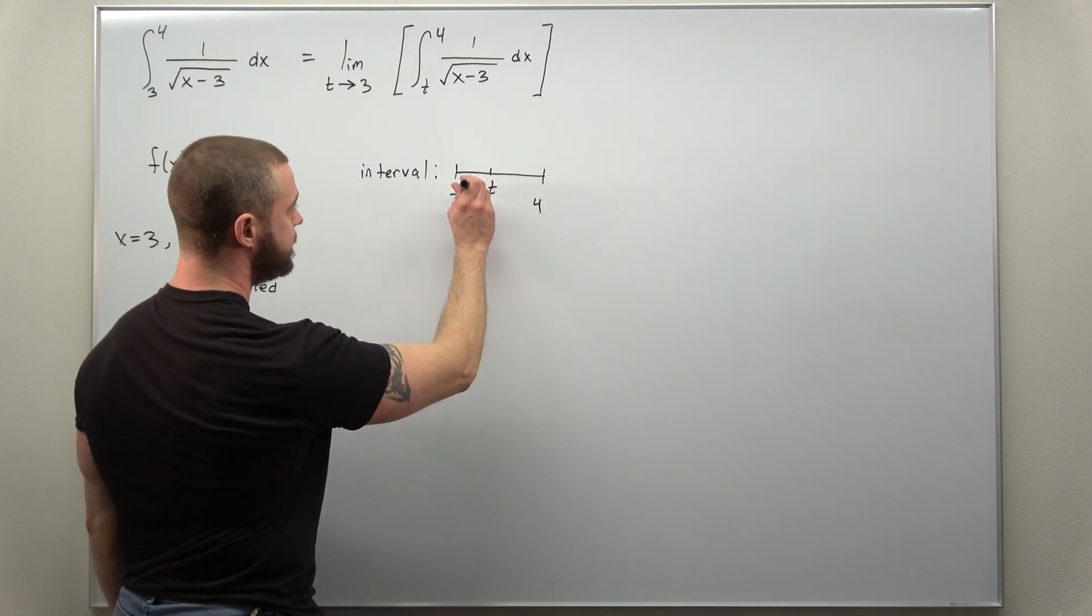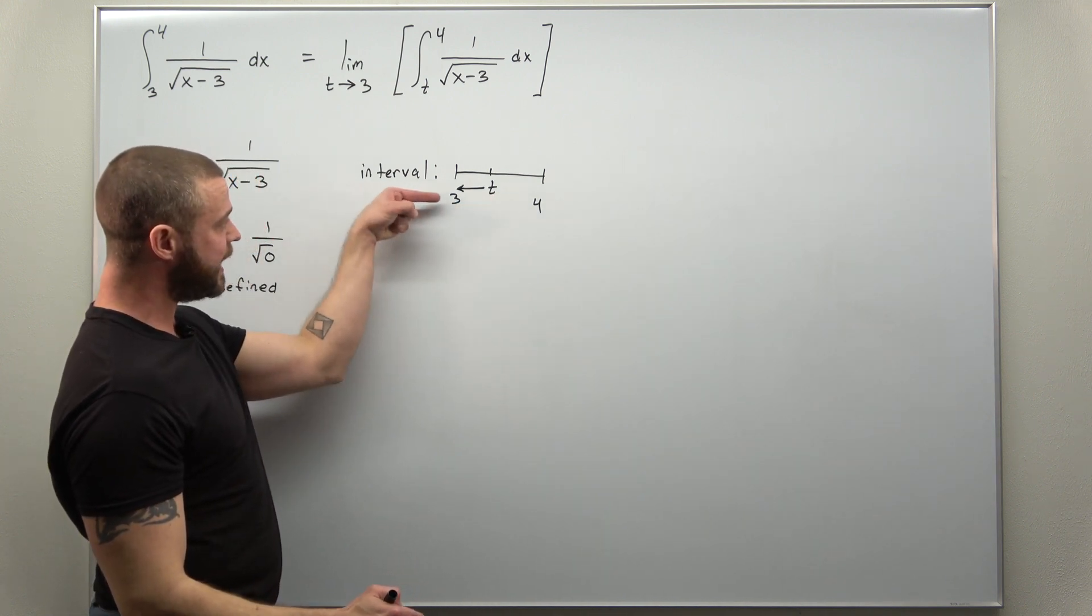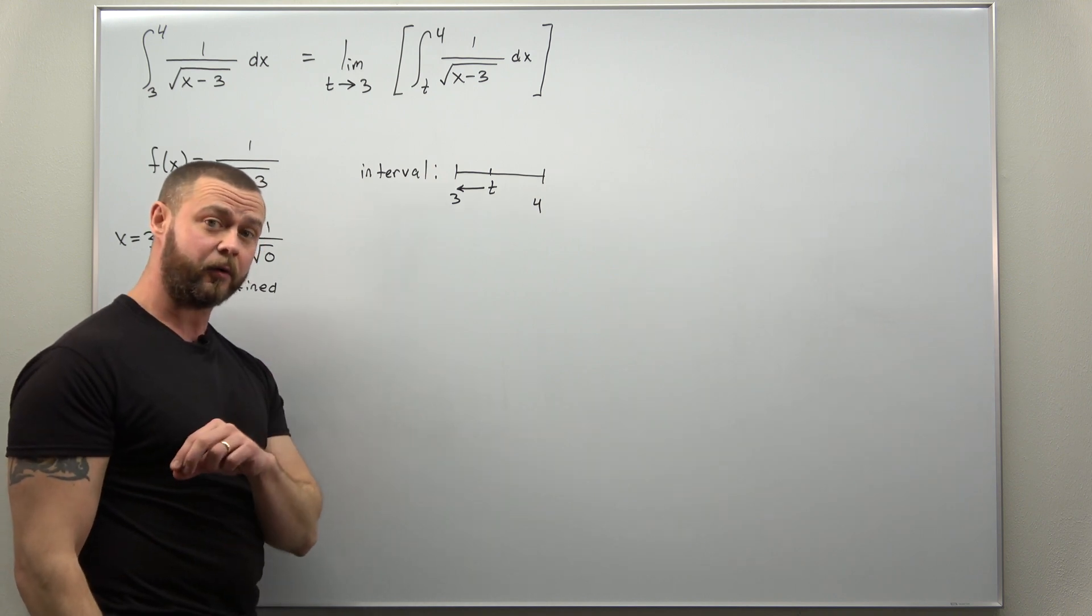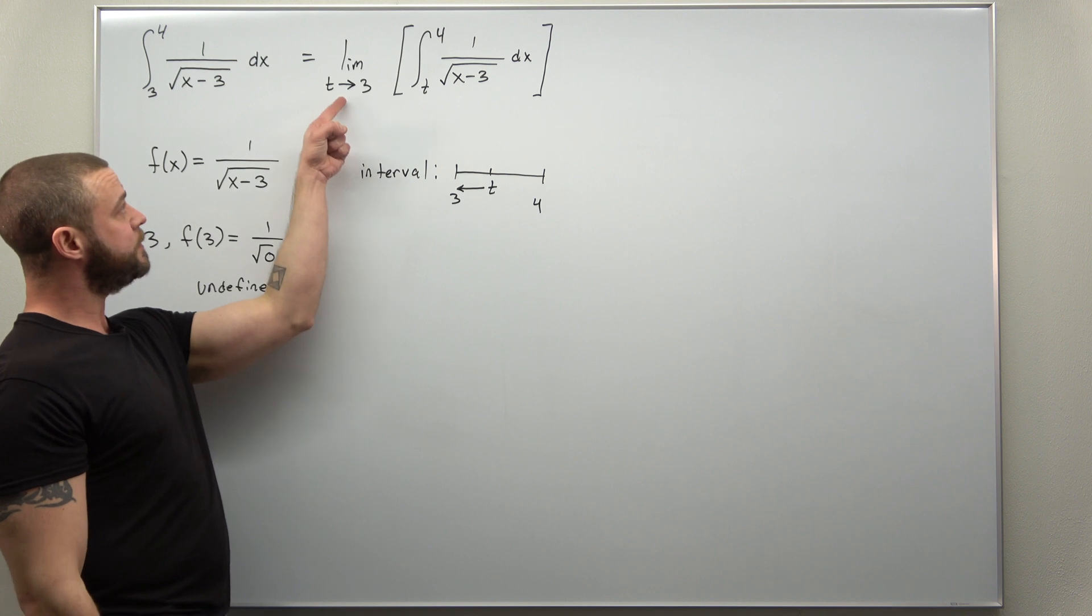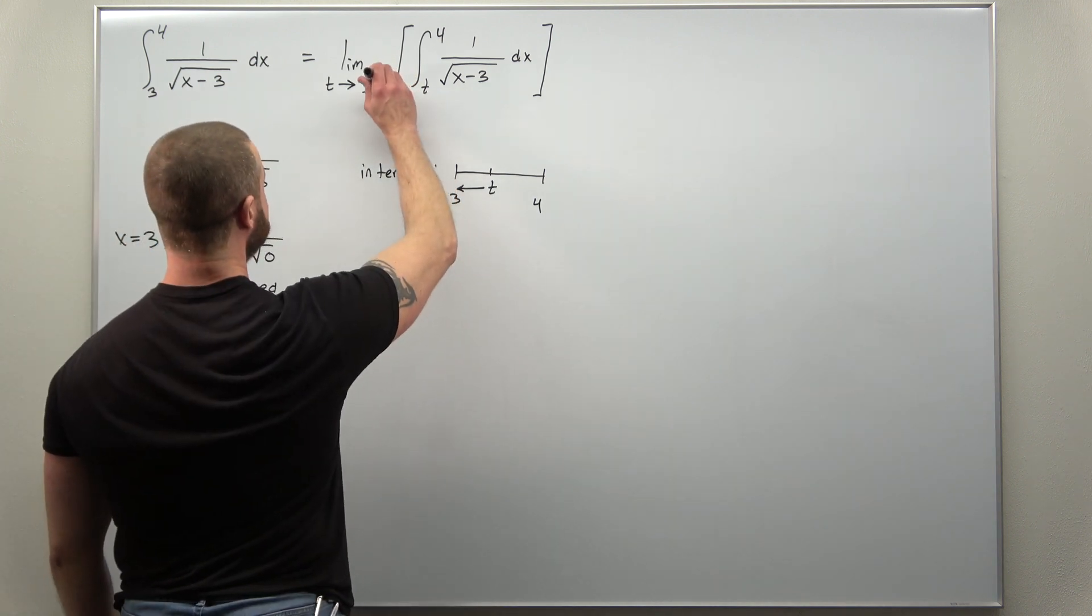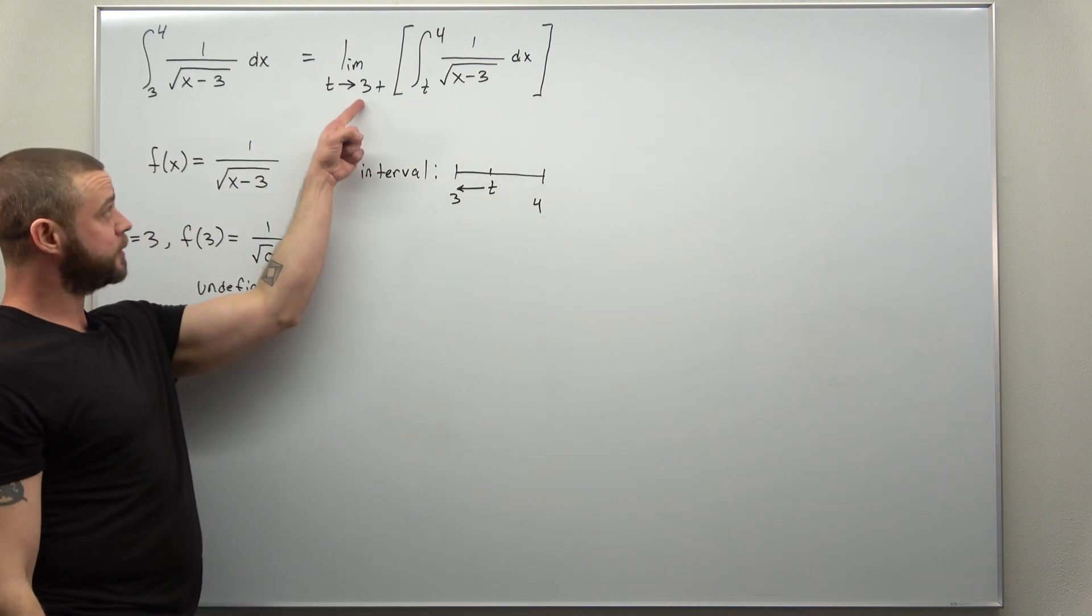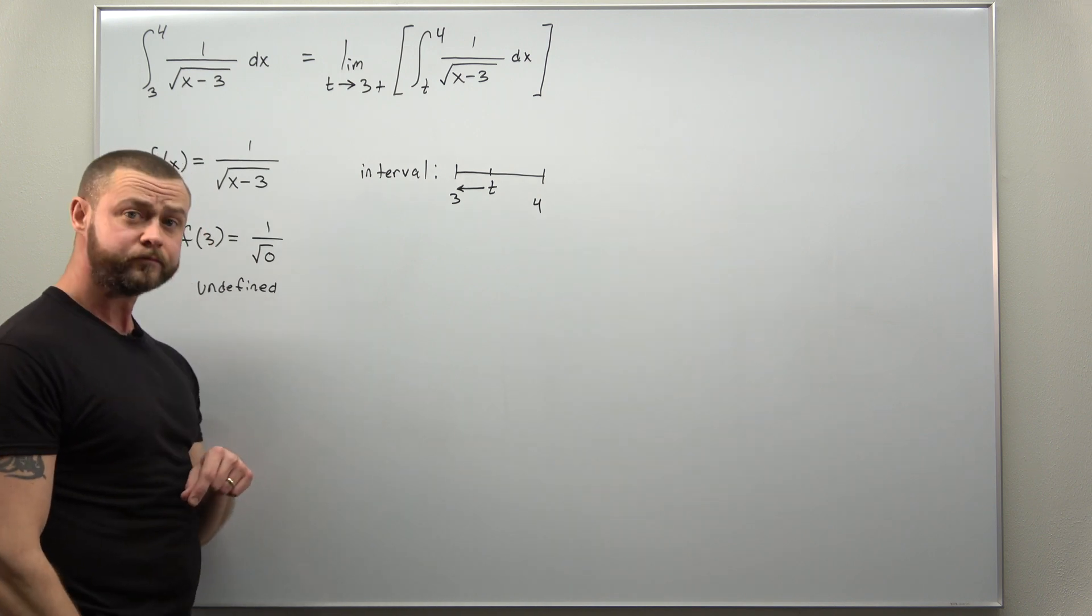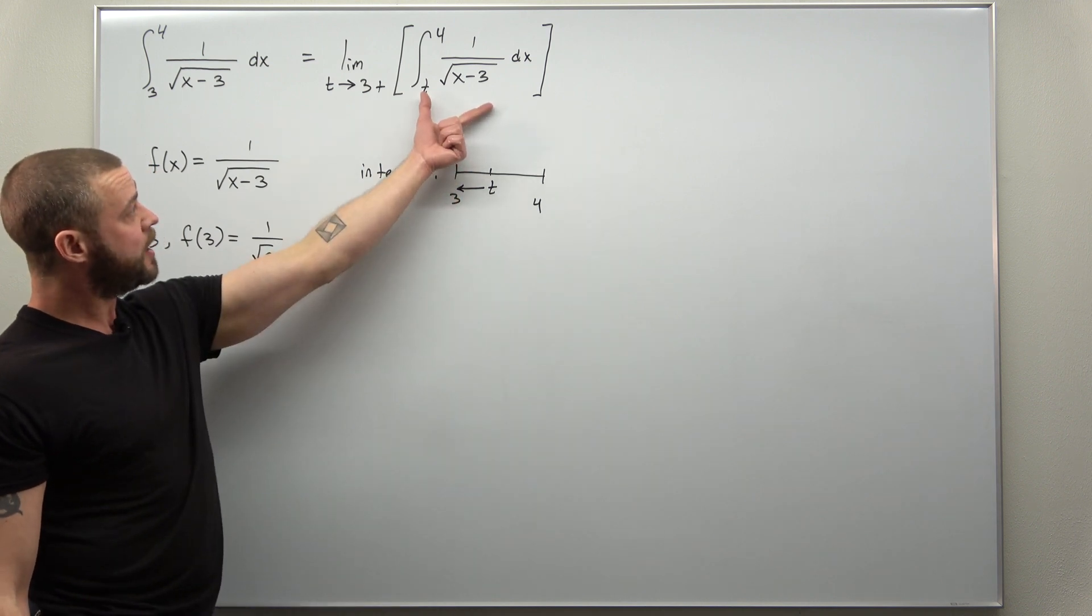approach 3 from the right side. We can't let t approach 3 from the left since that would bring us outside of our interval. So to set this up properly, we're going to define this limit as t approaches 3 from the right side—the notation, you just put a little plus after the number that you're approaching to indicate the direction you're approaching from. That is now set up properly.